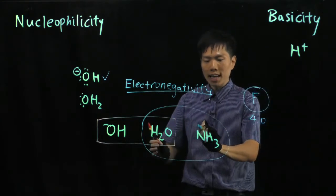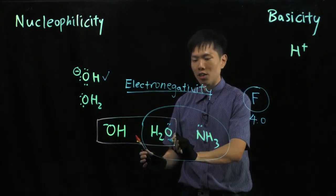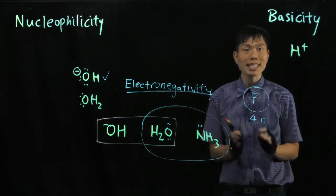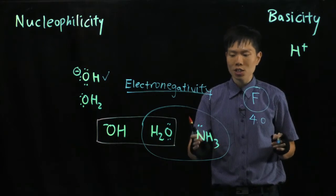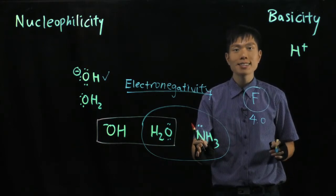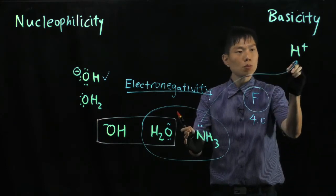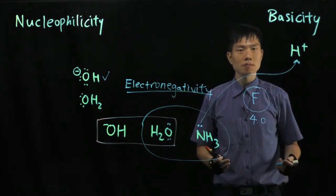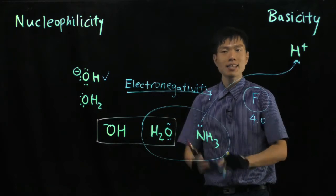So there's one lone pair on the nitrogen, two lone pairs on the oxygen. And remember, it is never about how many electrons you have, it's about how willing you are to give away electrons. So since nitrogen is less electronegative than oxygen, it can pick up the H+ more willingly and better than the oxygen. And hence, ammonia is a stronger base than water.